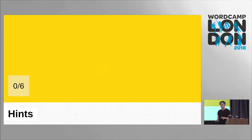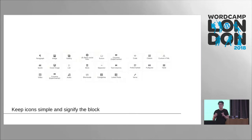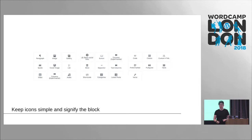I want to give you some hints now we've gone through block basics. The first hint is: when designing a block, all blocks have an icon and text with the block name. Keep the icon simple and signify the block — the same goes for the text. Don't have three lines, because in the library that won't look good. A short name and an icon that signifies exactly what that block is.